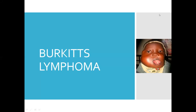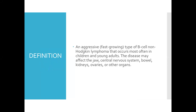Hello everyone, today we'll be talking about Burkitt's lymphoma. Burkitt's lymphoma refers to an aggressive type of B-cell non-Hodgkin's lymphoma that occurs most often in children and young adults. The disease may affect the jaw, central nervous system, bowel, kidney, ovaries, or other organs.